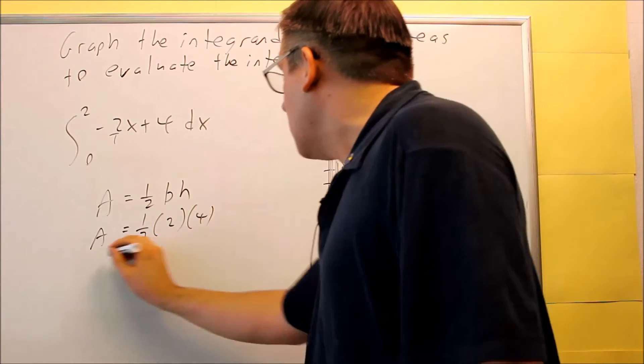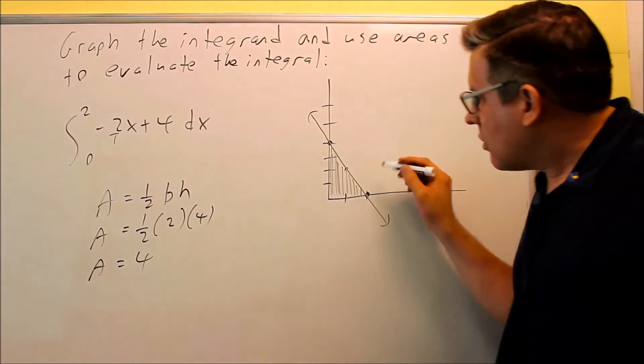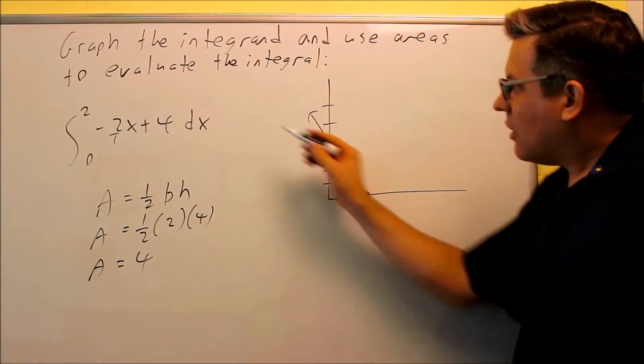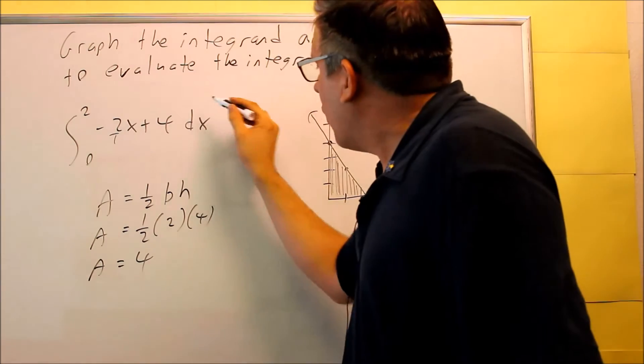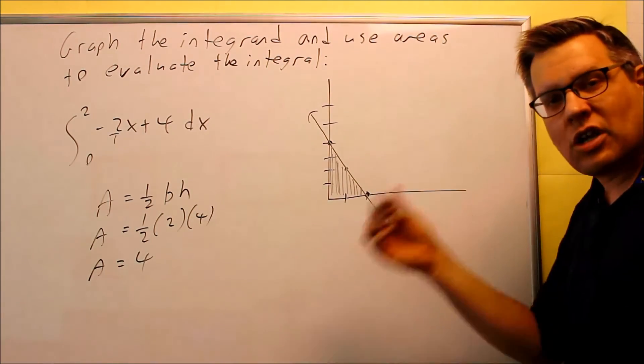And then when we work that out, we're going to get 4 square units as our actual area. So then all this right here, that would just basically equal 4 because we apply the geometry formula. So now let's take a look at another one.